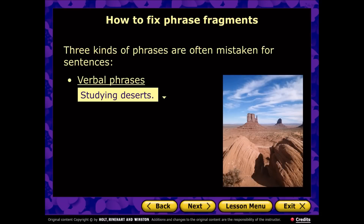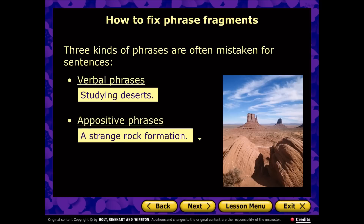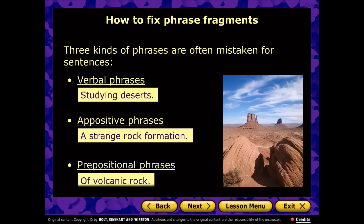The first type is called a verbal phrase — look at 'studying deserts.' The word 'study' is a verb, but if we add '-ing' to it and connect it with the noun 'deserts,' it becomes a verbal phrase. It's missing something; it's not a complete thought — it's a fragment. Another type often confused as a complete sentence is an appositive phrase, like 'a strange rock formation' — it has a subject but no verb. Finally, prepositional phrases like 'of volcanic rock': 'of' is the preposition, 'rock' is the object, and 'volcanic' is the adjective telling us what kind of rock.